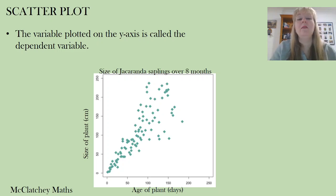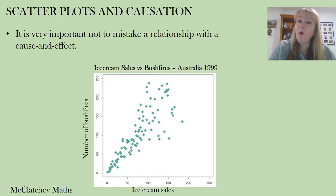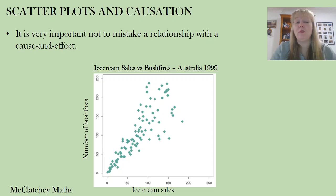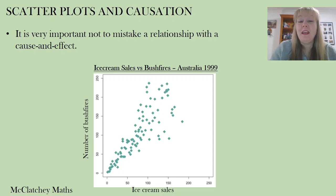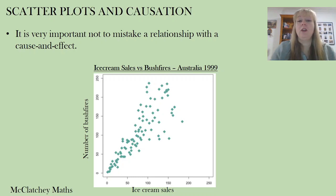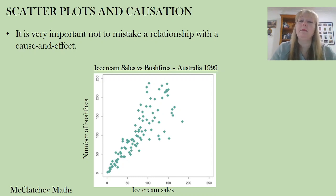That was a good example of possible causation. It's important that we don't see a relationship between two variables and automatically say one causes the other. For example, in this scatter plot of ice cream sales versus bushfires, you can see that the more ice creams sold, the more bushfires there are — but that doesn't mean ice cream sales are causing bushfires.